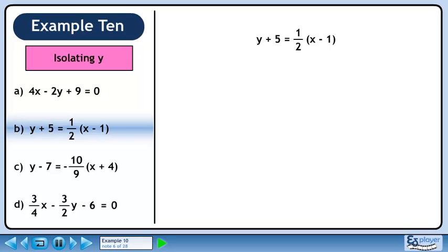Now we'll isolate y in part b. There are two ways we could approach this. Since it can be written as fraction equals fraction, we could cross multiply. However, using the LCM is just as quick in this case, and that's the technique we'll use here.